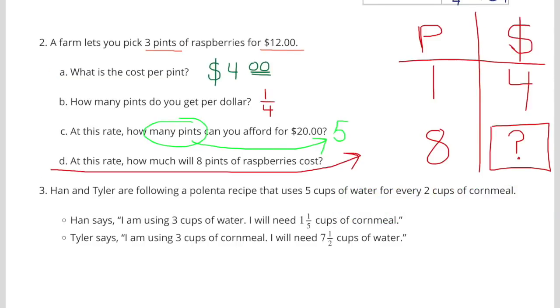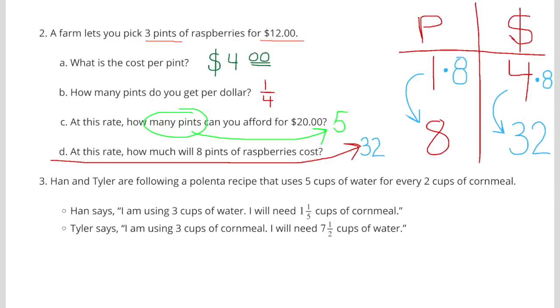D. At this rate, how much will 8 pints of raspberries cost? Well, if 1 pint costs $4, 8 pints is going to cost 8 times that. So 1 times 8 is 8, and 4 times 8 is 32. Number 2, 8 pints of raspberries would cost $32.